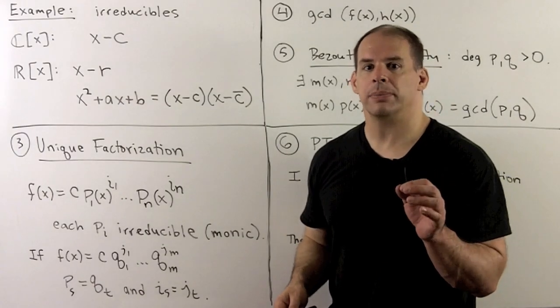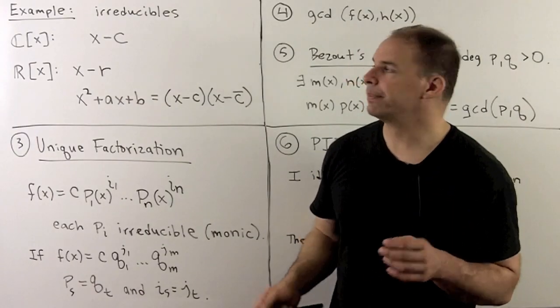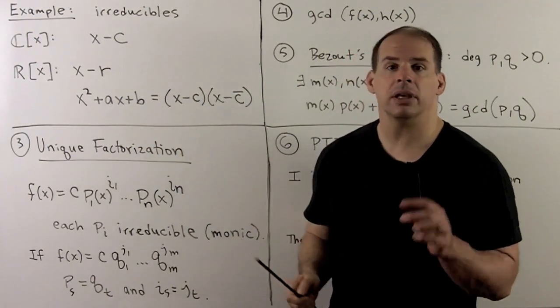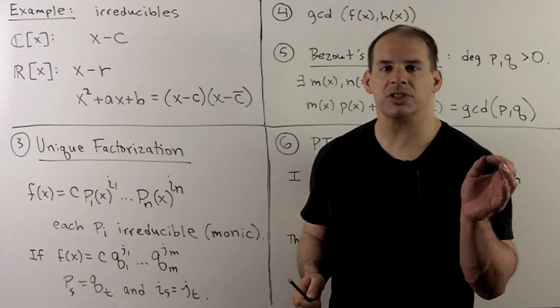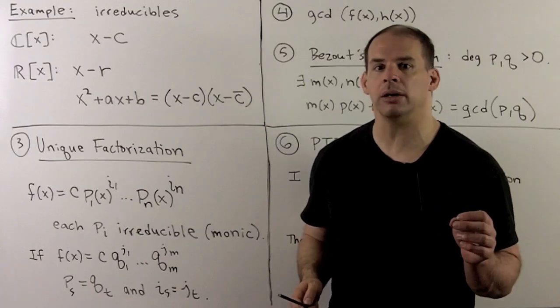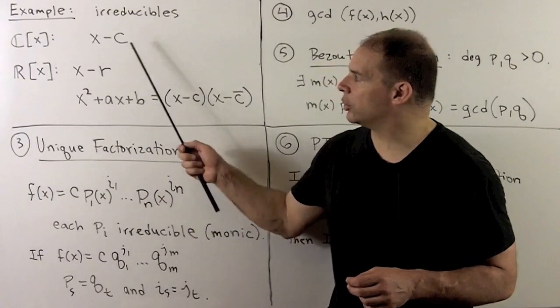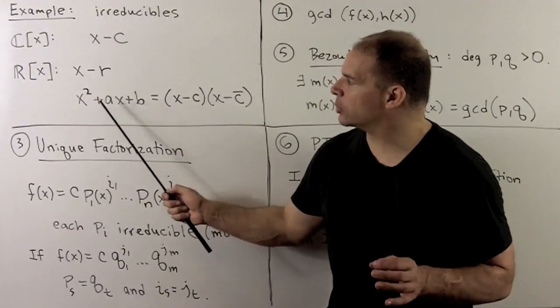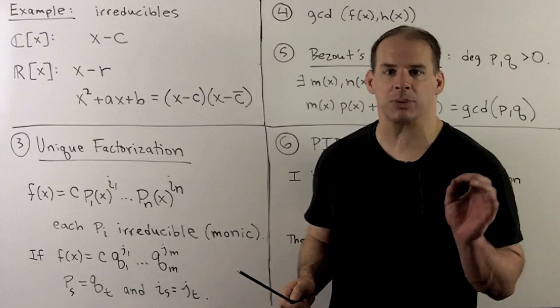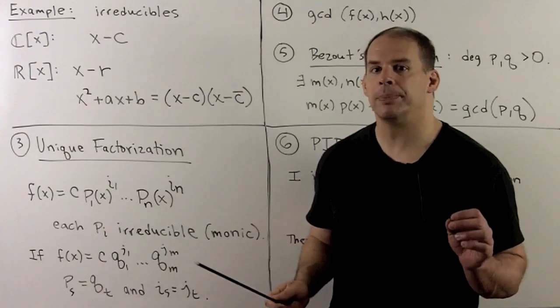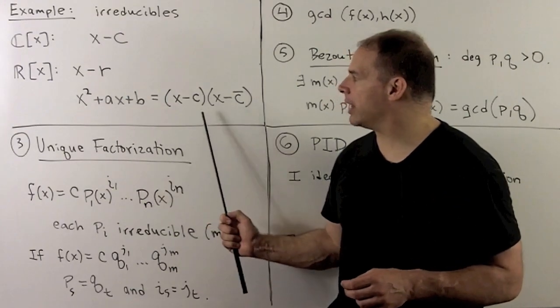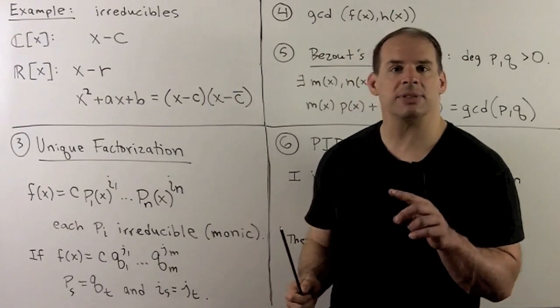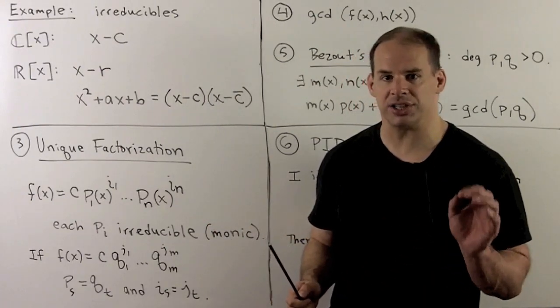For examples, if we're over the complex numbers, then every irreducible polynomial is of the form X minus C, if we insist on monic. So that just means the leading coefficient is one. For the reals, the irreducibles come in two types: X minus a real number, or the irreducible quadratics, X squared plus AX plus B, where A and B are real. And these factor over the complex numbers as (X minus C) times (X minus C conjugate), where C is complex.